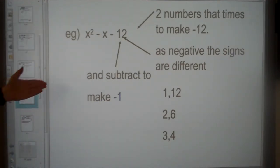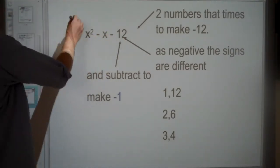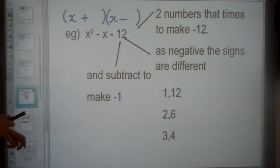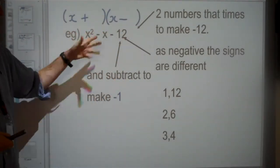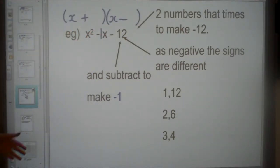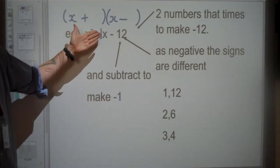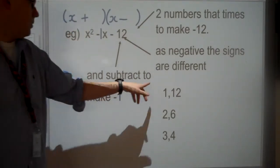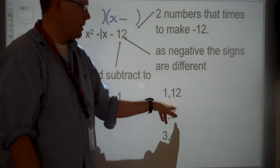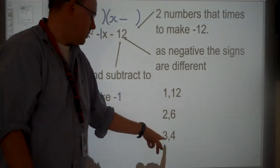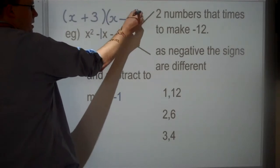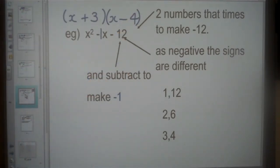This one can look a little more confusing. The signs are different again, so I know I can put x plus, x minus. Two numbers that times to make 12, and I'm going to subtract them, but there's no number here for the x. Remember that means it's going to be 1x. Really I'm trying to get -1 for this. 1 take away 12 is -11, or the other way round, positive 11, no good. 2 take away 6, -4, or the other way round, positive 4. 3 take away 4 is -1, so 3 take away 4 is going to give me my correct answer.